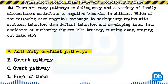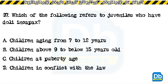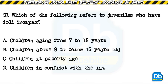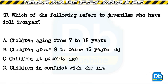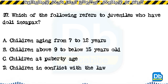Question 87: Which of the following refers to juveniles who have doli incapax? a) children aging from 7 to 12 years, b) children above 9 to below 15 years old, c) children at puberty age, d) children in conflict with the law. The answer is B, children above 9 to below 15 years old.